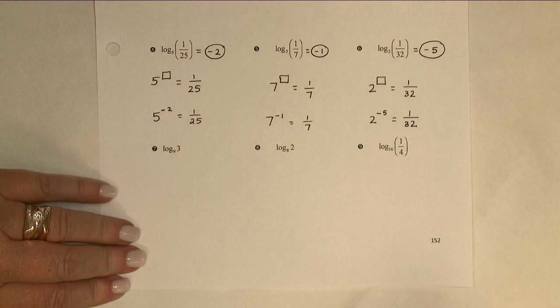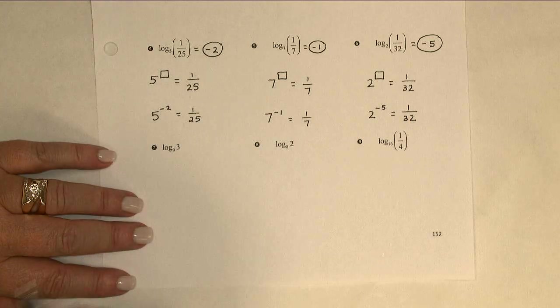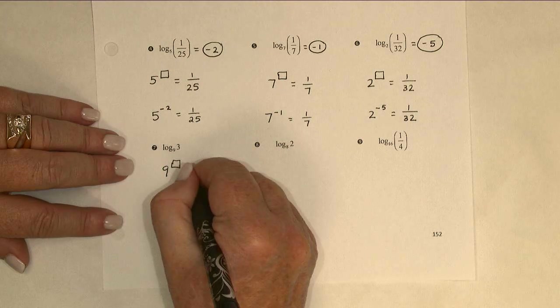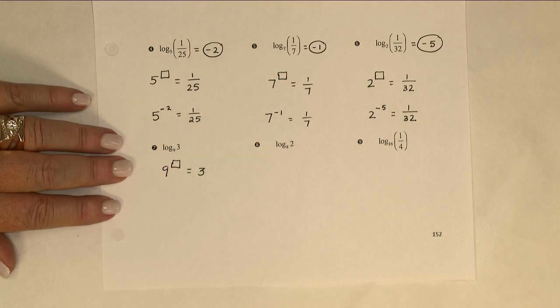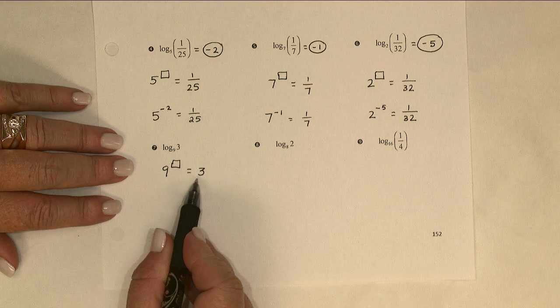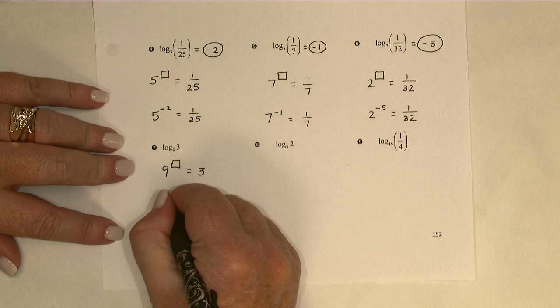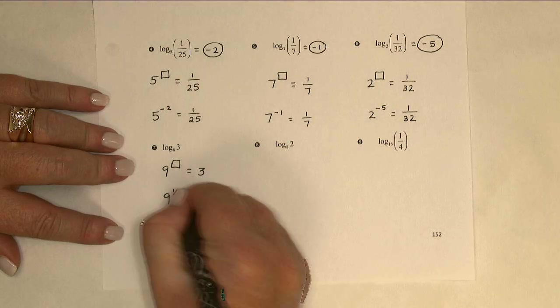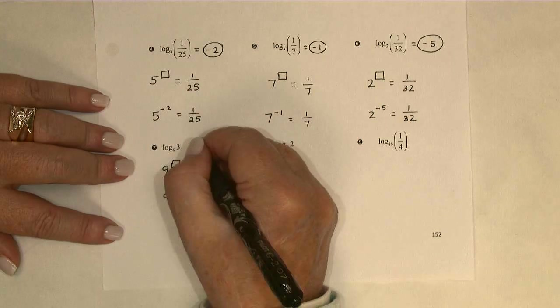The logarithm base 9 of 3. 9 to what power is 3. The first thing I think about here is that it's actually the square root of 9 that's 3. And then I'm just going to remember that square roots are actually fractional exponents, specifically the 1 half power. So, this logarithm is 1 half.